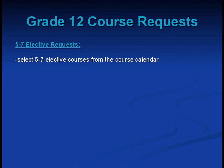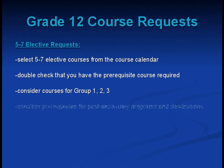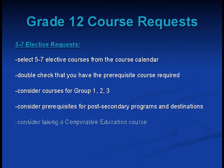Also select 5 to 7 elective courses from the course calendar. Double check that you have the prerequisite course required. Consider courses for groups 1, 2, and 3, and consider prerequisites for post-secondary programs and destinations. Consider taking a cooperative education course.